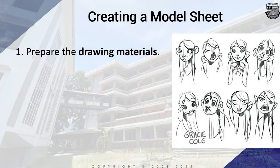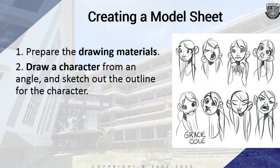Here are the things to consider in creating a model sheet. Number one: prepare all drawing materials needed and place them at your animation desk or workstation. Number two: draw a character from an angle and sketch out the outline for the character in the exact same way it should be finished in animation. Create the outline using several lines and shapes such as ovals and arcs.